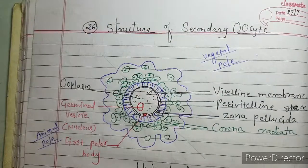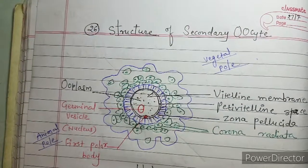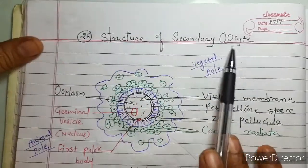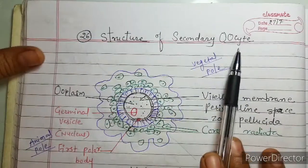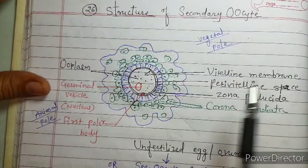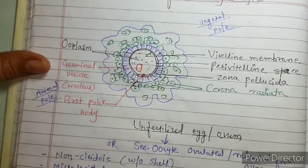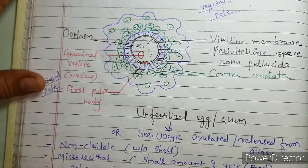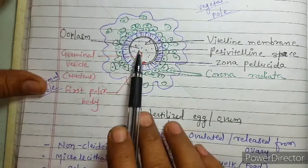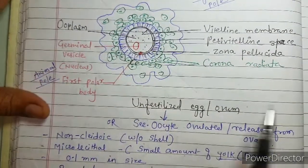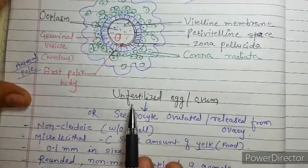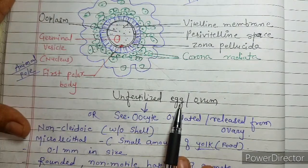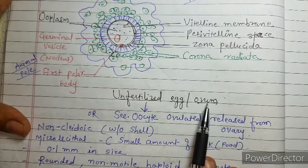Welcome students. In this period we will study about the structure of the secondary oocyte. This is the structure of the secondary oocyte. The secondary oocyte is also known as unfertilized egg, or it is also known as ovum.